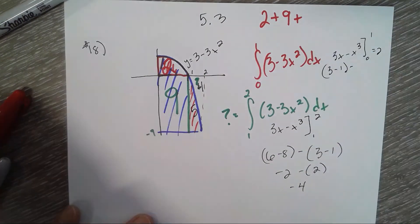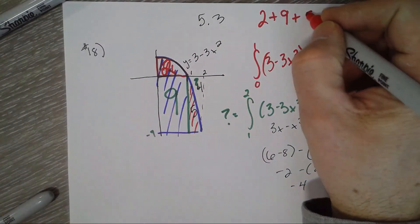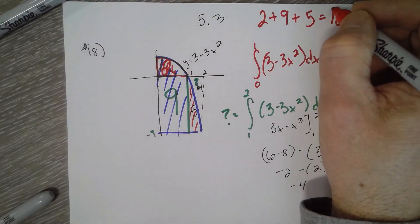All right, so 2 plus 9 plus 5 gives you 16 for the total area.